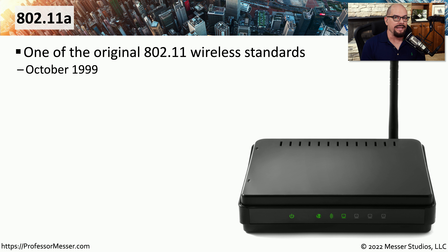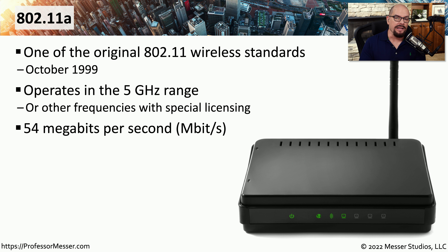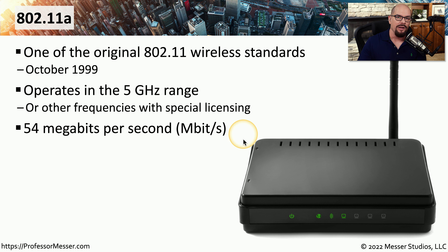The first standard we'll look at is the 802.11a, one of the very first wireless standards released back in October of 1999. It's a standard that operates exclusively in the 5 gigahertz frequency range — it can use other frequency ranges with special licensing. The 802.11a wireless standard operates at 54 megabits per second, and although this doesn't seem very fast now, back in 1999 that was a great deal of speed for a network that could operate wirelessly.